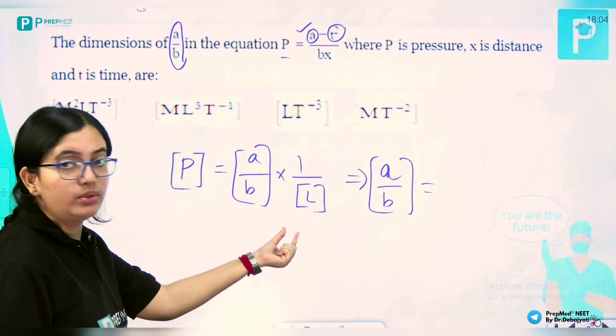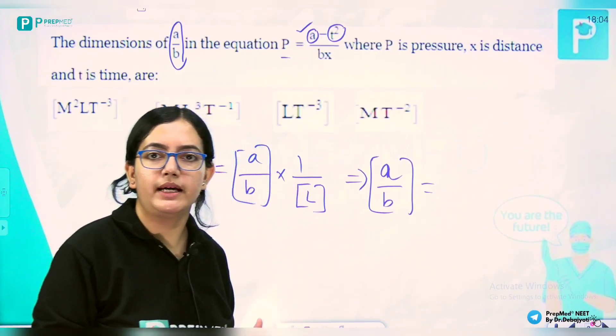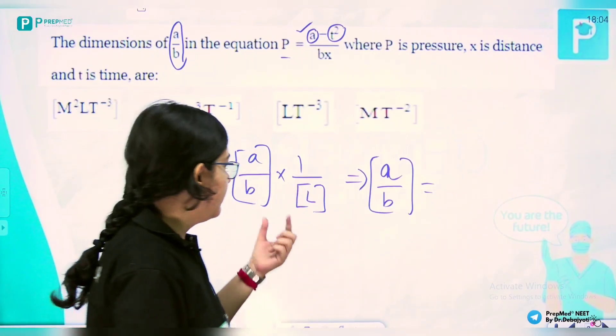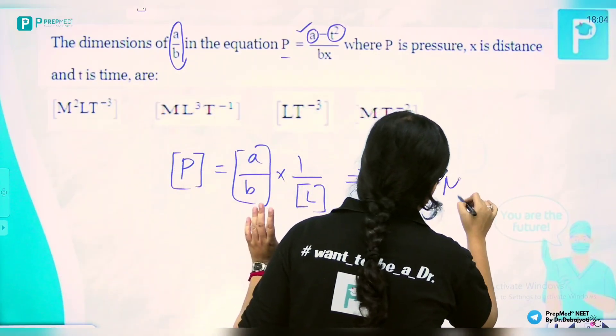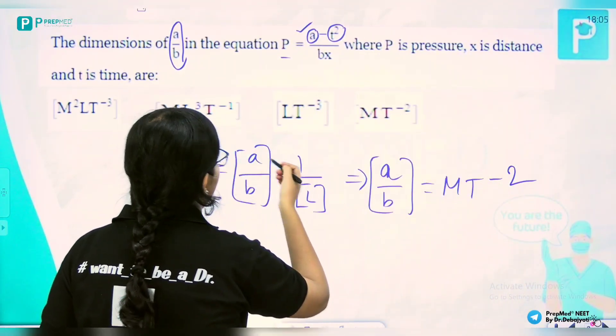pressure dimension times length. Pressure dimension is ML^-1T^-2, and multiplying by L we get MT^-2. That's the answer. Moving to the next problem: